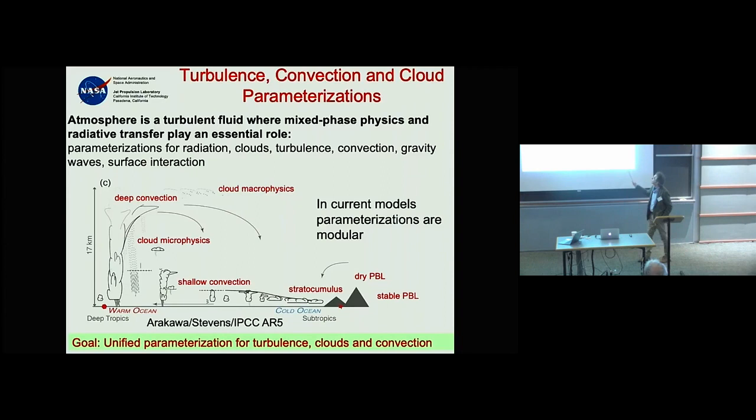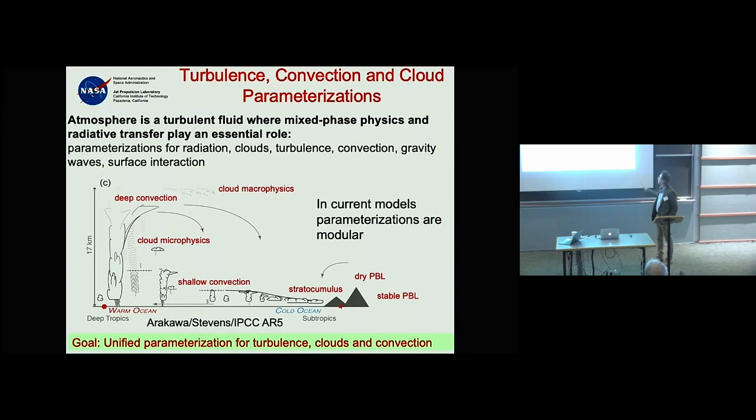About 20 years ago at ECMWF, for example, we had two different modules for stable boundary layers, one for the dry convective boundary layer, stratocumulus mixing in a completely different part of the code, shallow convection another, and so on.